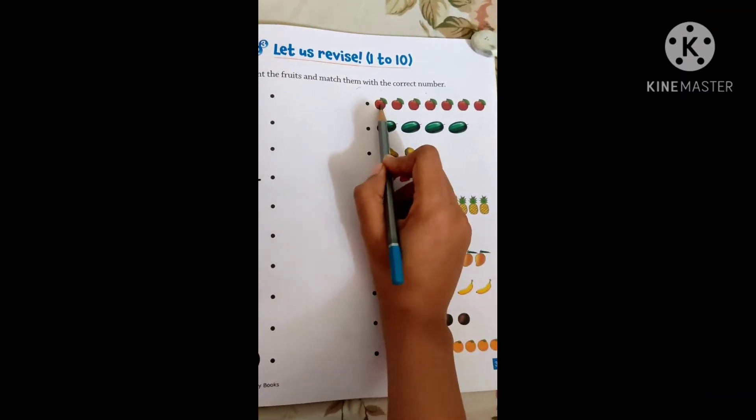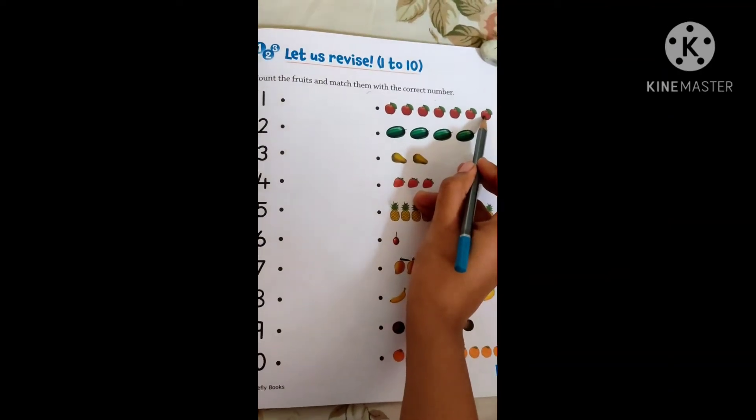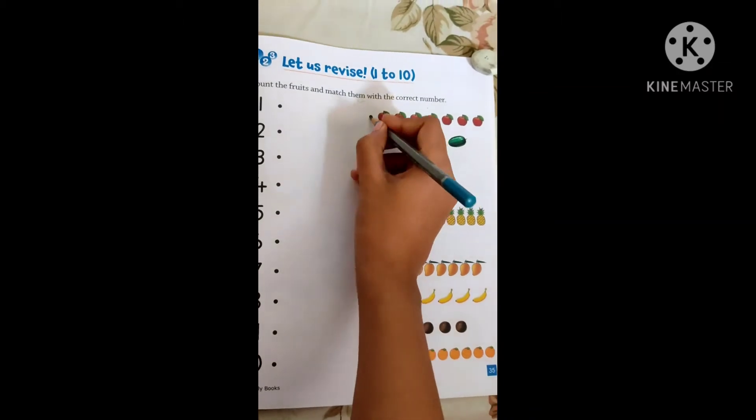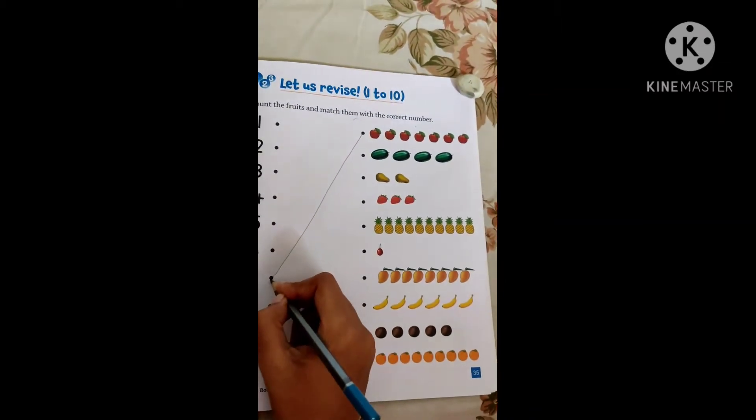So the apple first. 1, 2, 3, 4, 5, 6, 7. So how many apples are there? 7. So let us match the 7 to the number 7.